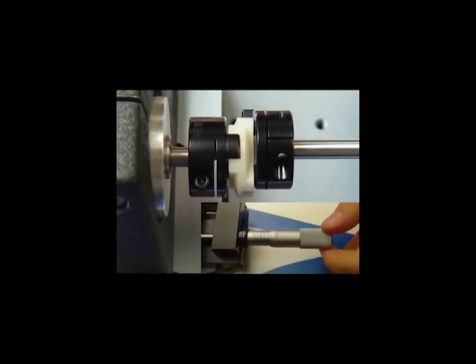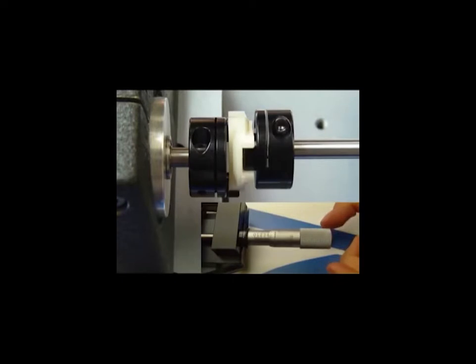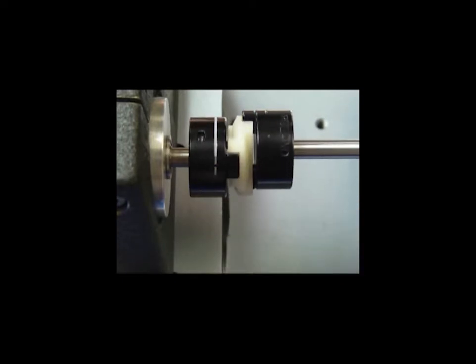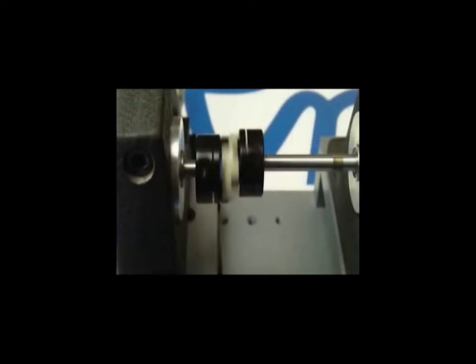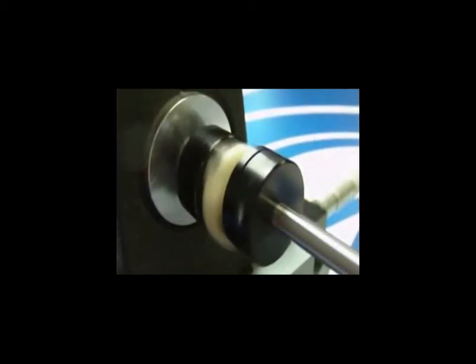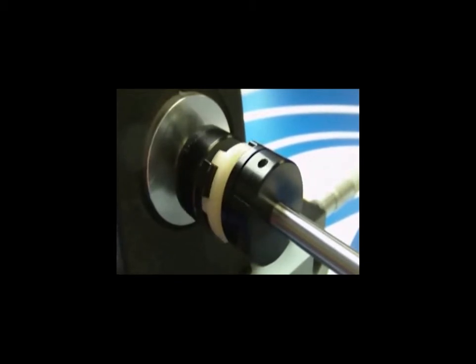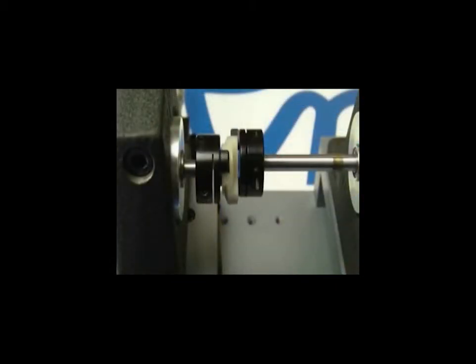ten percent of the outside diameter. The hubs of Oldham couplings are anodized for improved lubricity and increased life. The discs are offered in white nylon or black acetyl, each with different performance benefits. Oldham couplings are ideal for